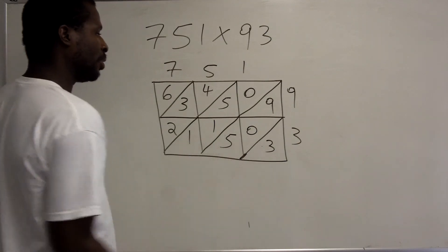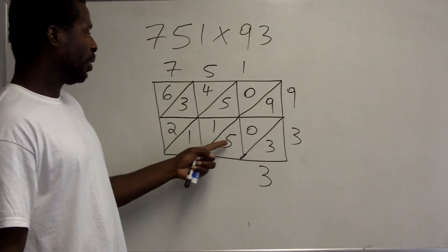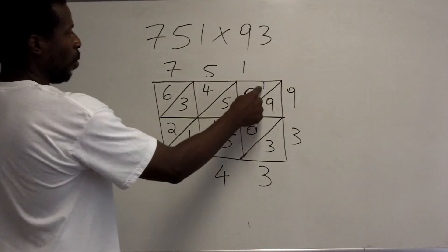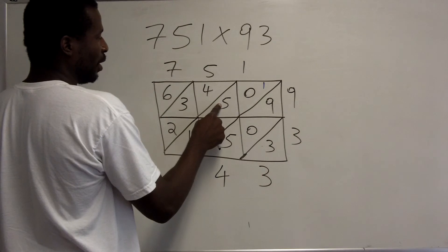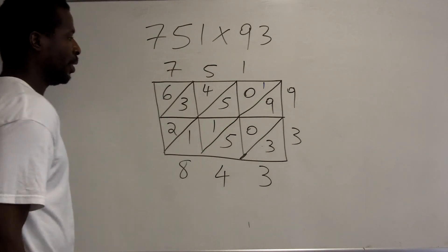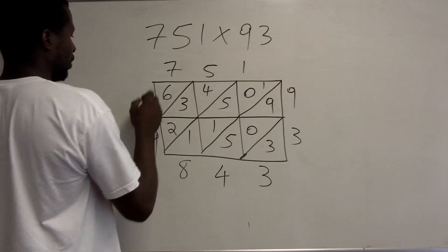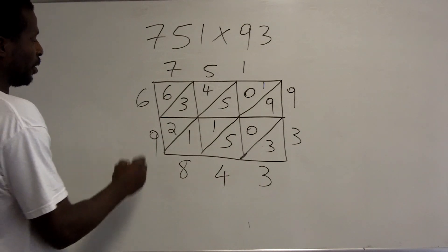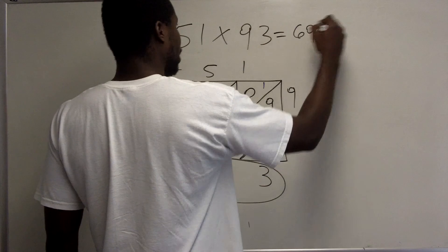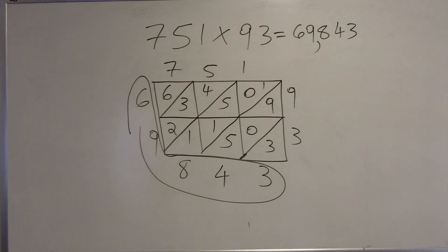3 times 1 is 3 — record 0 above, 3 below. Now adding the diagonals: the first diagonal is just 3. The second diagonal is 9 plus 0 plus 5, which equals 14 — record 4, carry 1. Next diagonal: 1 plus 0 plus 5 plus 1 plus 1 equals 8. Then 4 plus 2 equals 6, plus 3 is 9. The last diagonal is 6. Reading along the side and bottom gives 69,843. So 751 times 93 equals 69,843.